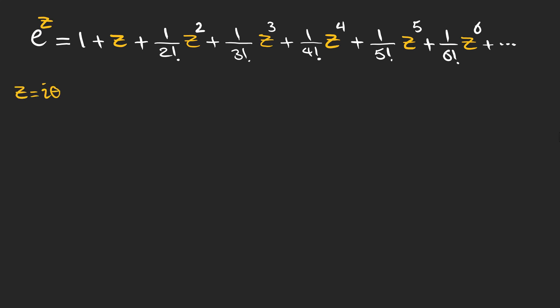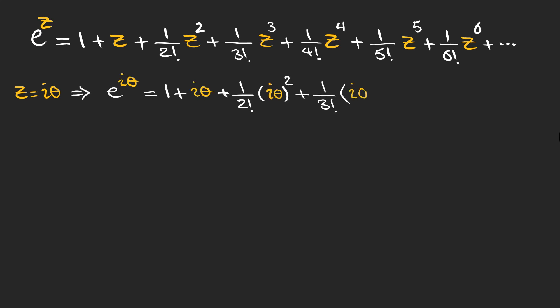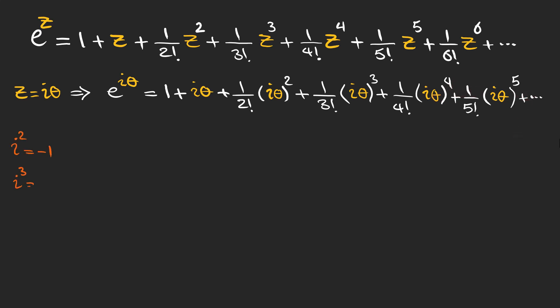I want to write the series expansion for the imaginary number i theta. We can write the series expansion for e to the power of i theta and examine each term. We have i, then i squared, i cubed, i to the 4th, and so on. We know that i squared is minus 1, i cubed is minus i, i to the 4th is 1, i to the 5th is i, i to the 6th is minus 1, and so on. So the terms become minus theta squared, minus i theta cubed, theta to the 4th, and i times theta to the 5th.